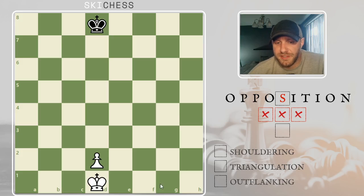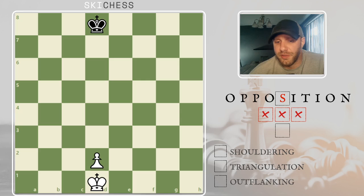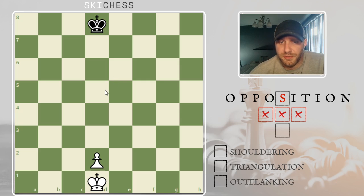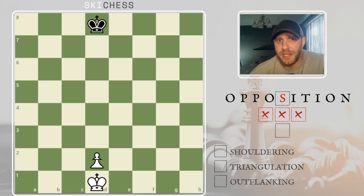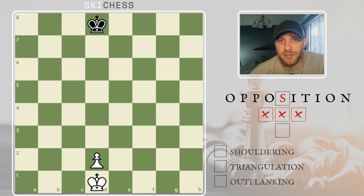Hey guys, we're going to cover the basics of opposition. This is one of the very first positions you should start with when learning opposition — you could even do it without the pawn on the board just to show what opposition is, but we're going to show one of the main scenarios you would use it. Think of opposition as being in a hallway where somebody's got to step out of the way. Kings can't be next to each other — they create a little force field — and we're going to take advantage of that.